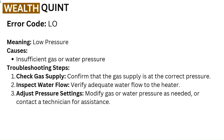Error code LO — meaning Low Pressure. Causes: insufficient gas or water pressure. Troubleshooting steps: Check gas supply — confirm that the gas supply is at the correct pressure. Inspect water flow — verify adequate water flow to the heater. Adjust pressure — modify gas or water pressure settings as needed, or contact a technician for assistance.